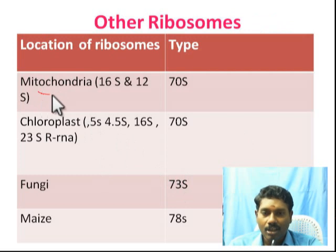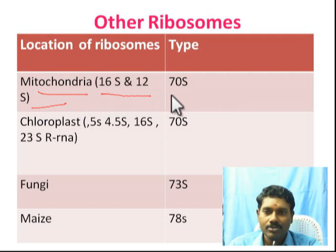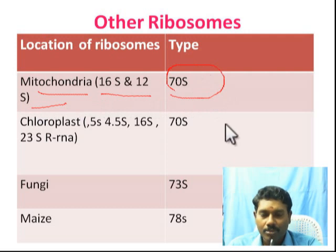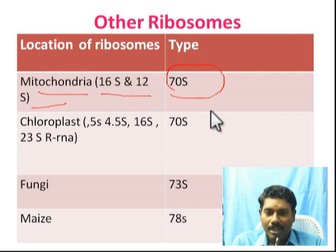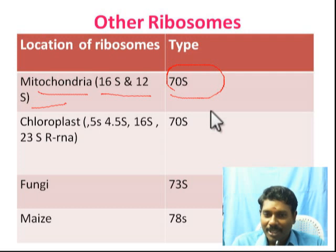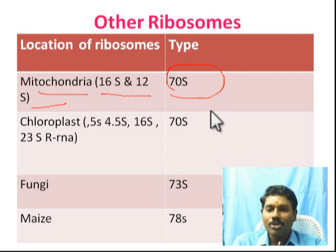There are also ribosomes present in organelles like mitochondria and chloroplasts, which contain 16S RNA and 12S RNA types. Mitochondria and chloroplasts are eukaryotic organelles, but their ribosomes are of the 70S type — similar to prokaryotic ribosomes.